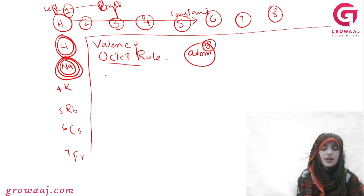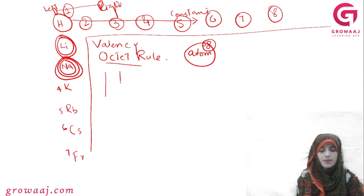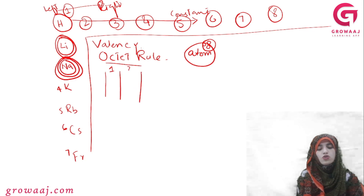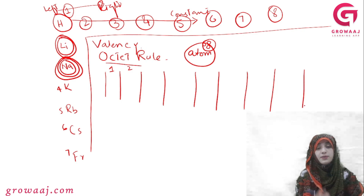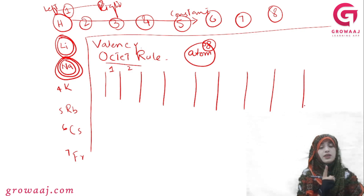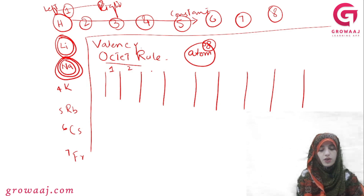Here you can see that in the Periodic Table, we talk about Group No. 1, Group No. 2, Group No. 3, 4, 5, 6, 7 and 8. If we talk about the arrangement, how many groups are in our Periodic Table? There are 8 groups: 1, 2, 3, 4, 5, 6, 7 and 8.